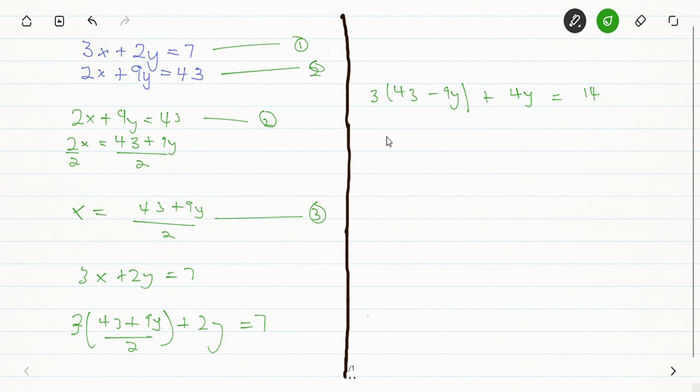Now we will clear the bracket and we will get 129 minus 27y plus 4y equals 14. When we simplify further, the y terms will give us minus 23y equals 14 minus 129. So 14 minus 129 is going to give us minus 115. Then we divide both sides by minus 23, and we're going to get y equals 5.